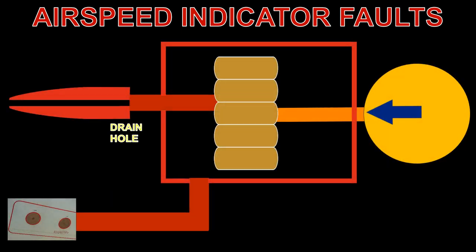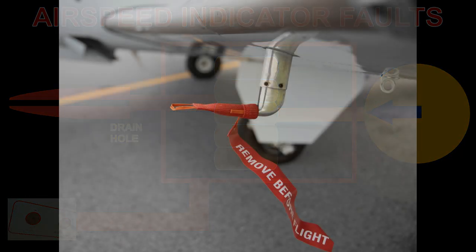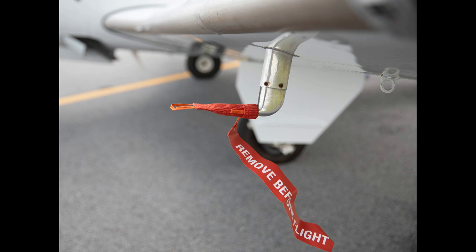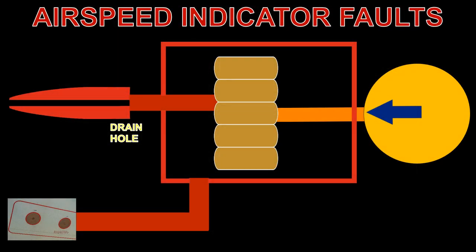If the pitot tube and static sources are not regularly checked, or covers are left on the pitot tube or static source, errors in the airspeed indication will occur. The pitot tube may become blocked because of insects, dirt, or failure to remove the pitot cover. A pitot blockage will prevent ram air from entering the system.